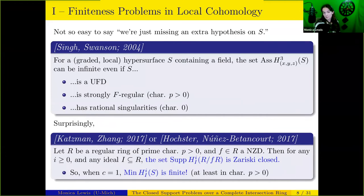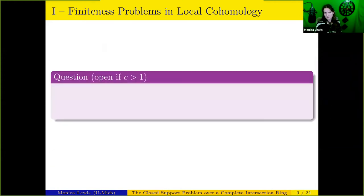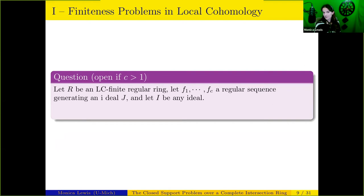You could ask a number of questions from this. One is: can we get rid of the characteristic p hypothesis? At this point in time it remains an open question whether closed support holds for equal characteristic zero hypersurfaces. Another direction — and this is the primary focus of today's talk — is: what is the outlook for generalizing this result to higher codimension complete intersections? The question is: take an LC finite regular ring, a regular sequence generating an ideal J, and another ideal I. Is the support of the local cohomology of the complete intersection R/J always a closed set? This is open in codimension strictly greater than one.